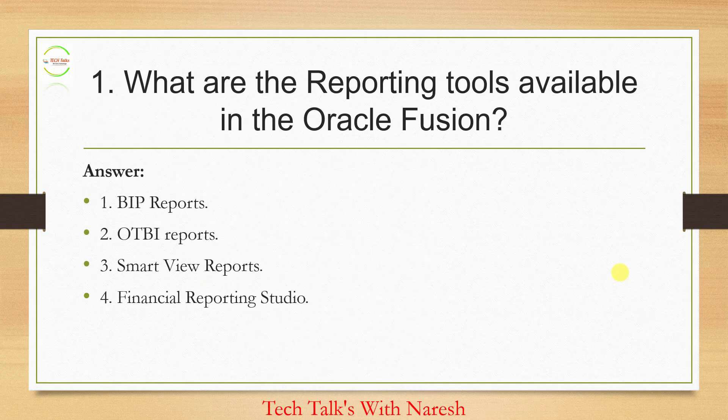There are four reporting methods. The question will be: what are the reporting tools available in Oracle Fusion? There are four reporting tools majorly used. First is the BIP report, second is the OTBI report, third is the SmartView report, and last is Financial Reporting Studio — we can call it FR Studio as well.